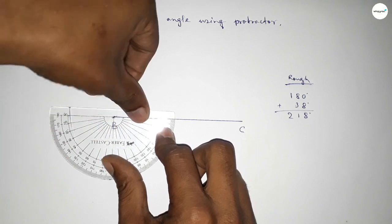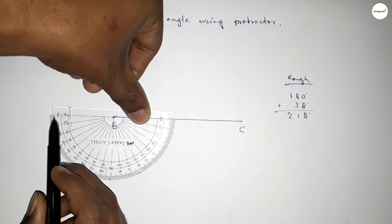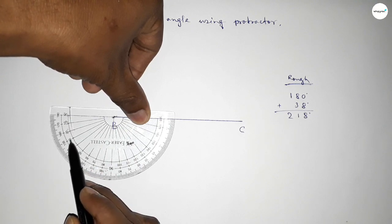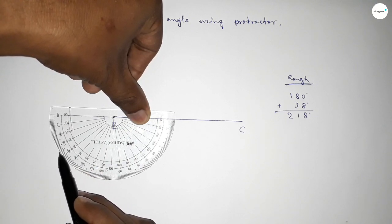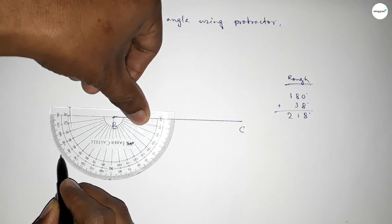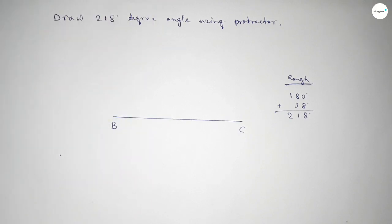So this is 180 degree angle. Also this is starting 0, 10, 20, 30, 35, 36, 37, 38. So this is 38. So by adding 38 degree angle with 180 degree, then we can get 218 degree angle.